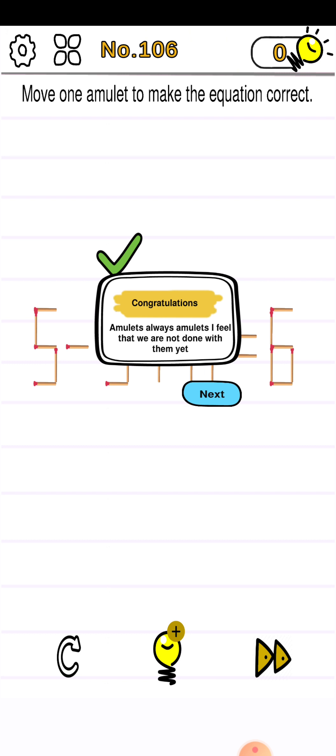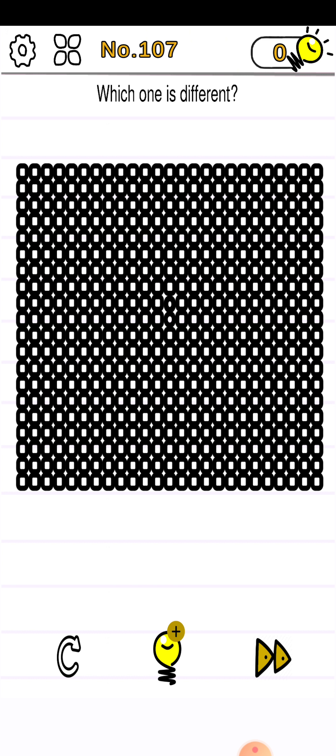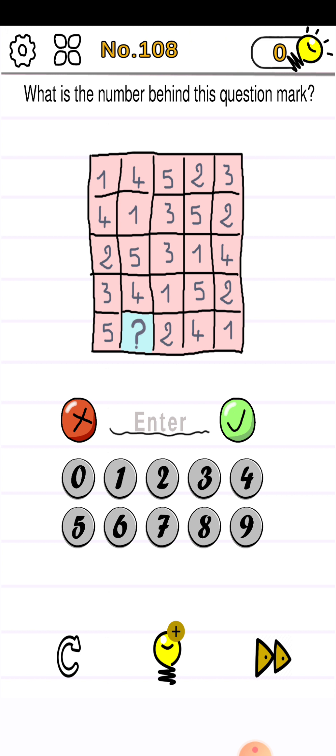And five minus five plus six equals six. This is the right answer. Let's proceed to 107. Which one is different? So tap your finger here. This one is different.